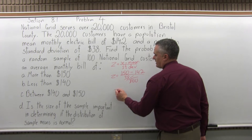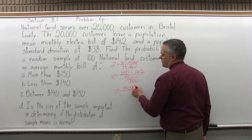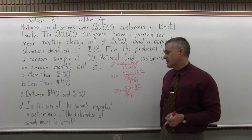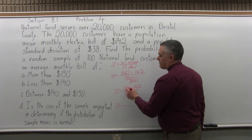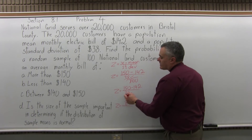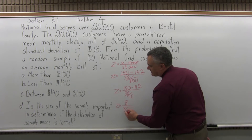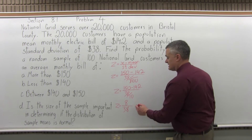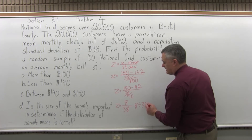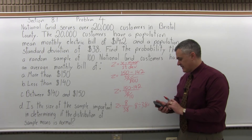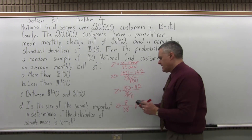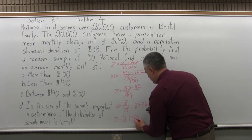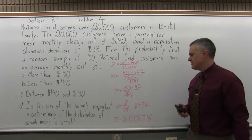So Z equals 150 minus 142 over 38 over 10. The square root of 100 is 10. On top, 150 minus 142 is 8. In the denominator, 38 divided by 10 is 3.8. Then 8 divided by 3.8 — I'll use the calculator. The calculator gives Z equals 2.105263158, which we round to 2.11.